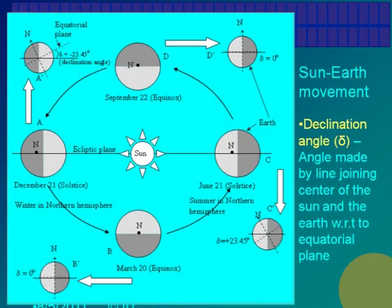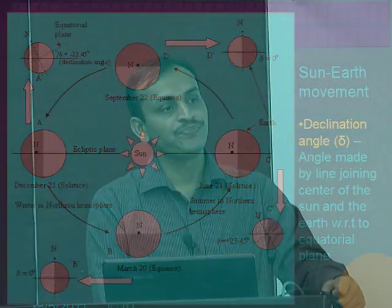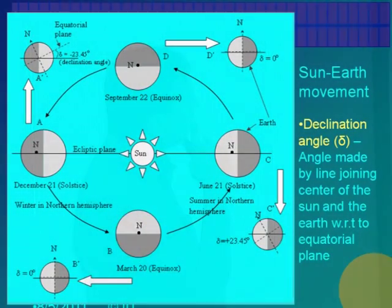Let us look at the geometry of the sun and earth — how the position of the sun and earth changes with respect to each other, and due to that changing, how the solar radiation changes. Look at the diagram and see if it is making sense to you of any kind, how the radiations work.